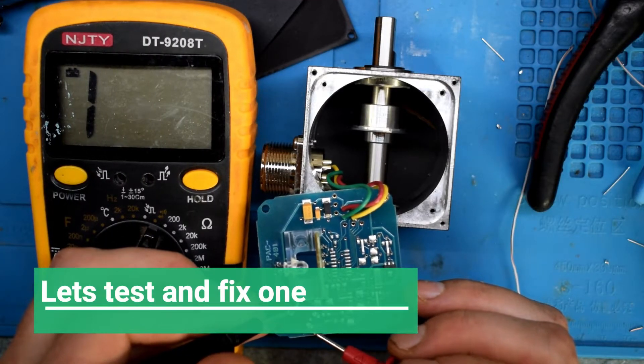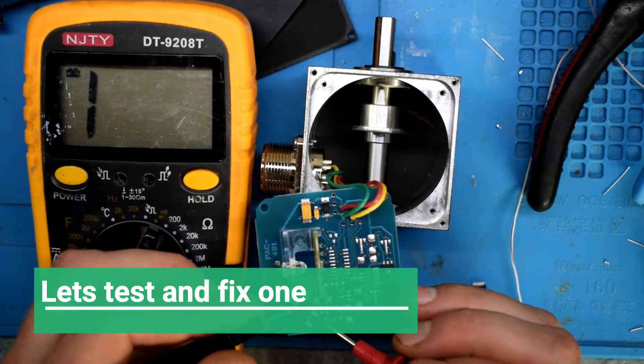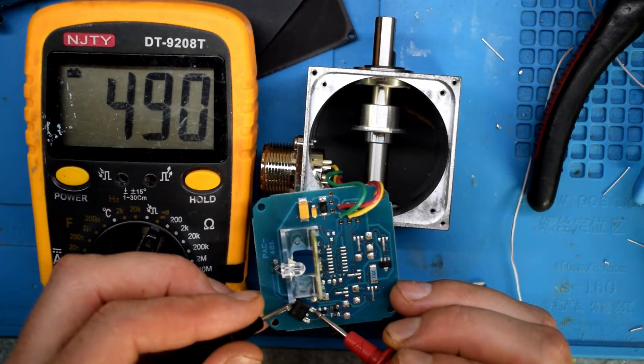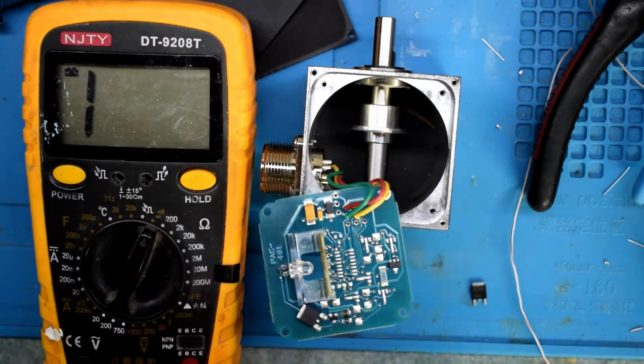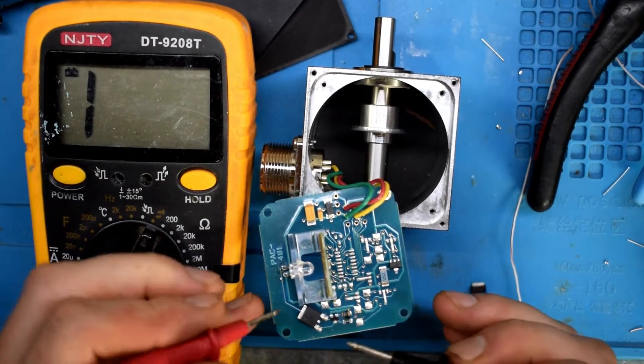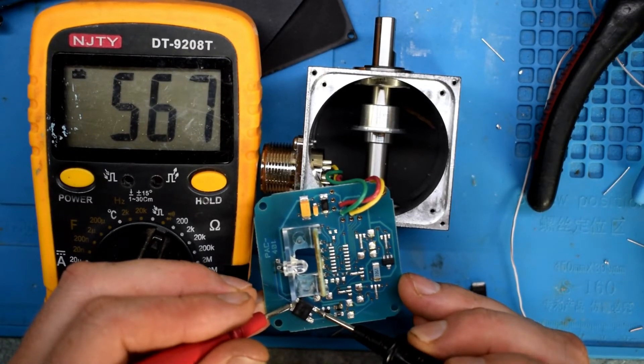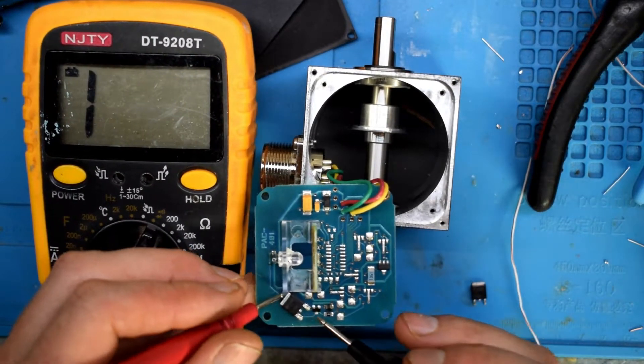This is the gate, drain, and source. So I'm measuring 490 and then if you flip around it should measure an open circuit right here. But it doesn't. So I'll be taking this guy off.